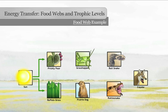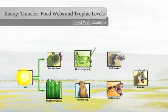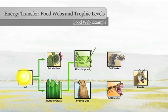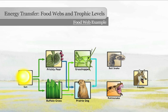This food web depicts the transfer of energy from organism to organism in the grasslands of the Texas Panhandle, where buffalo grass is a major producer. Grasshoppers eat buffalo grass. Prairie dogs consume buffalo grass, grasshoppers, and prickly pear cactus.